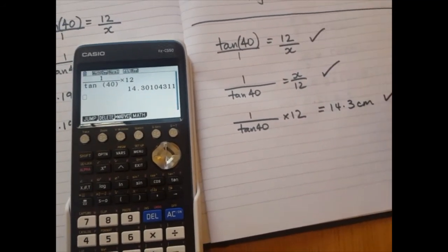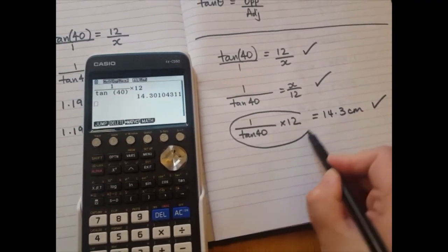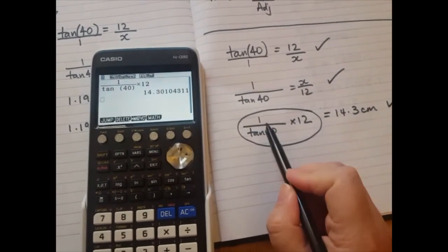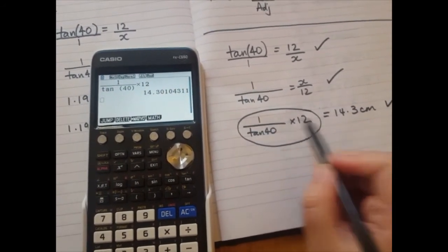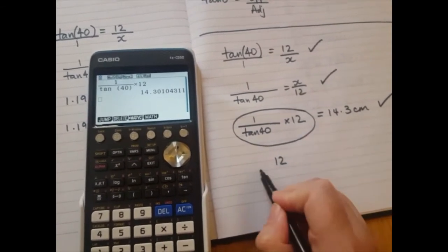So three steps of working and you're done. Another way to write this bit is you can mentally think, okay well this is a fraction times the fraction 12 over 1. So 1 times 12 is 12. Tan 40 times 1 is itself.